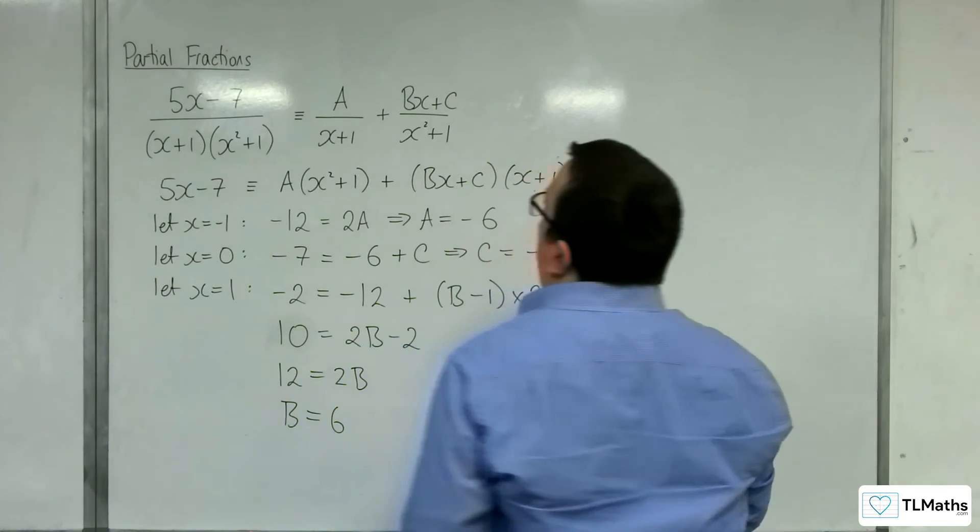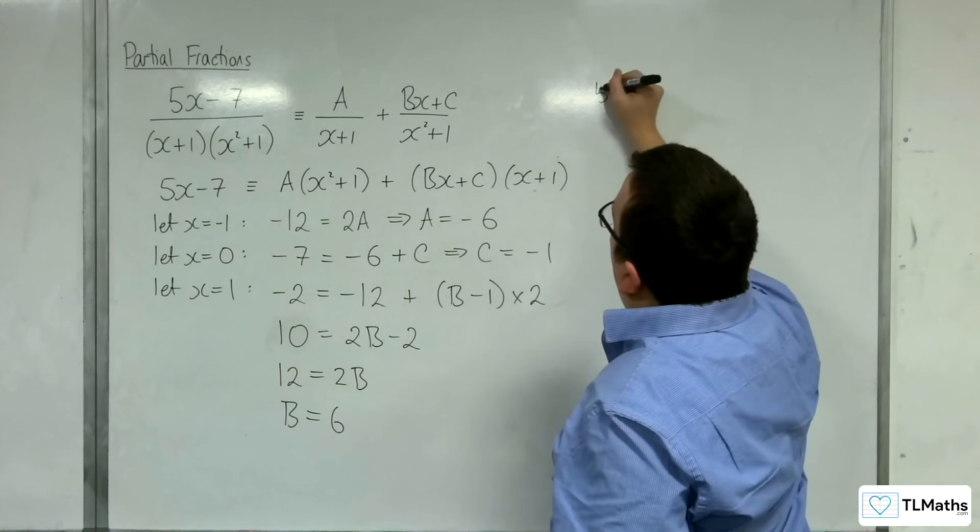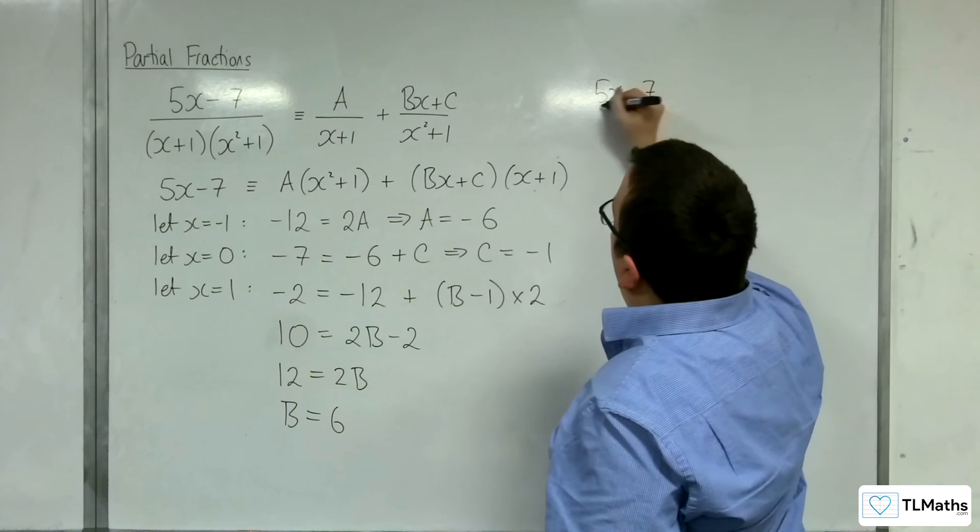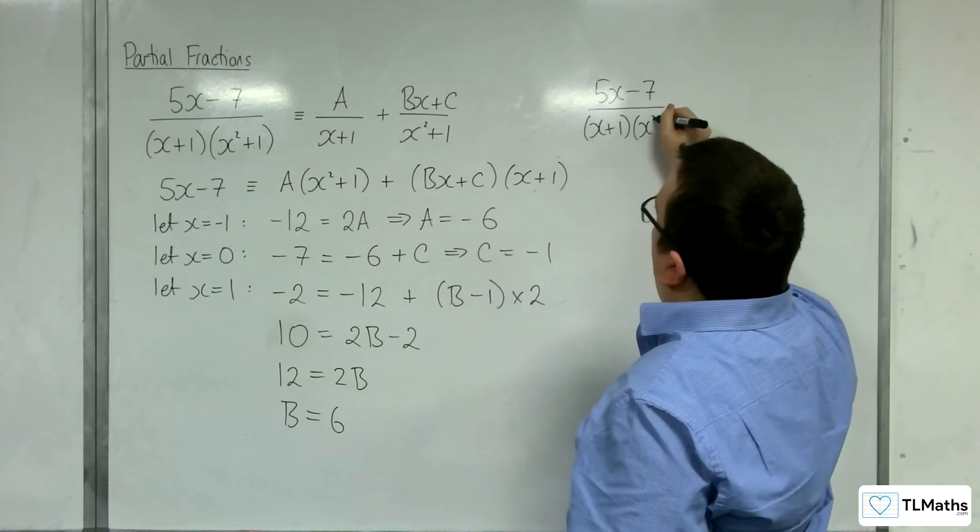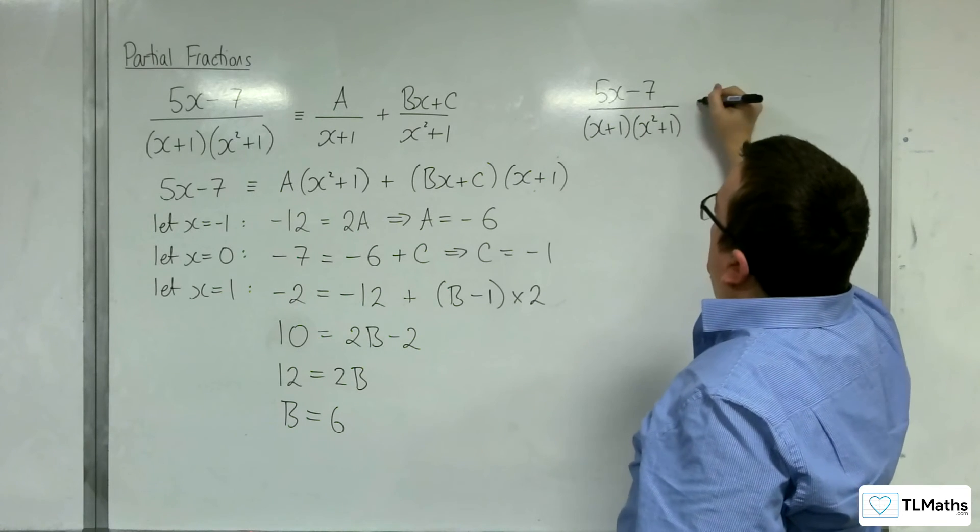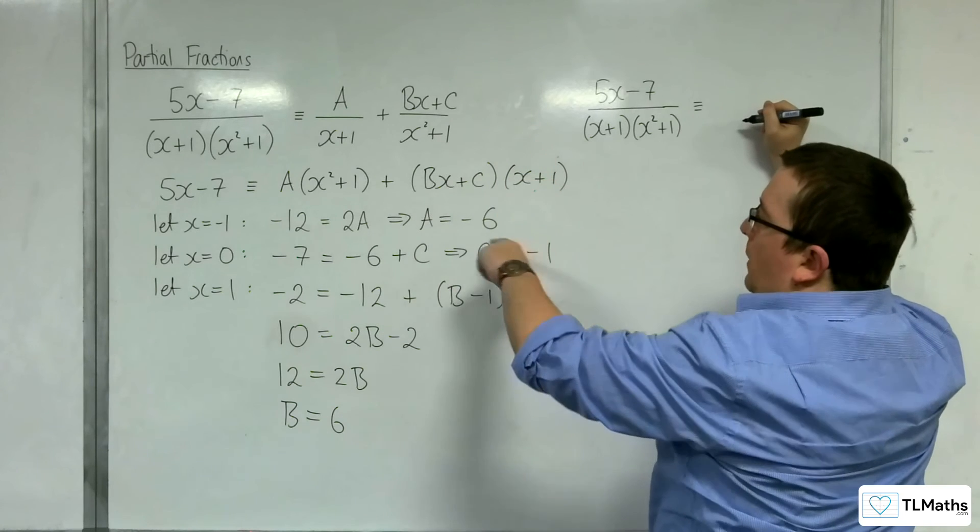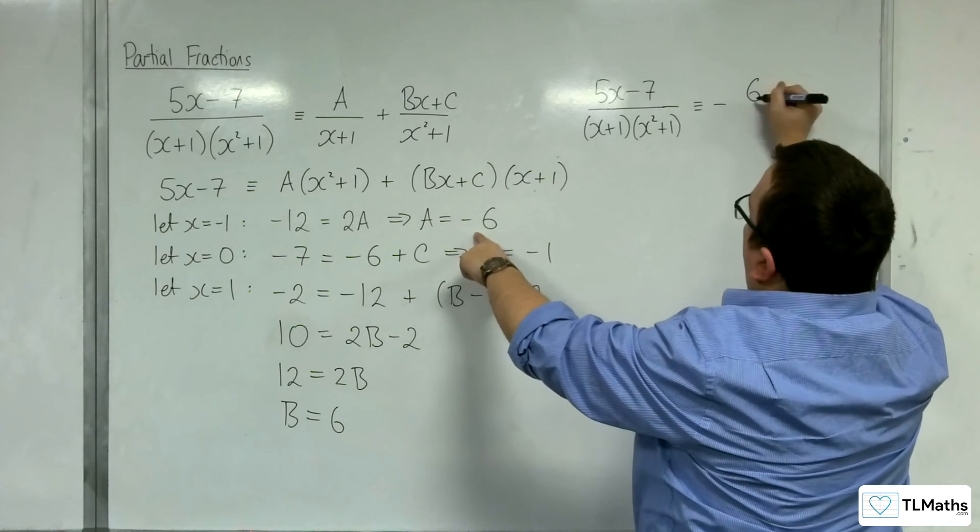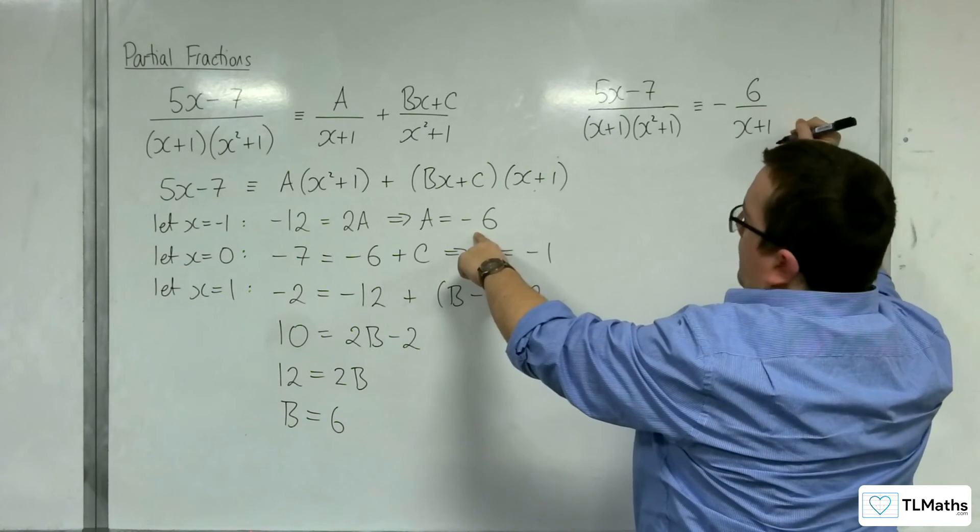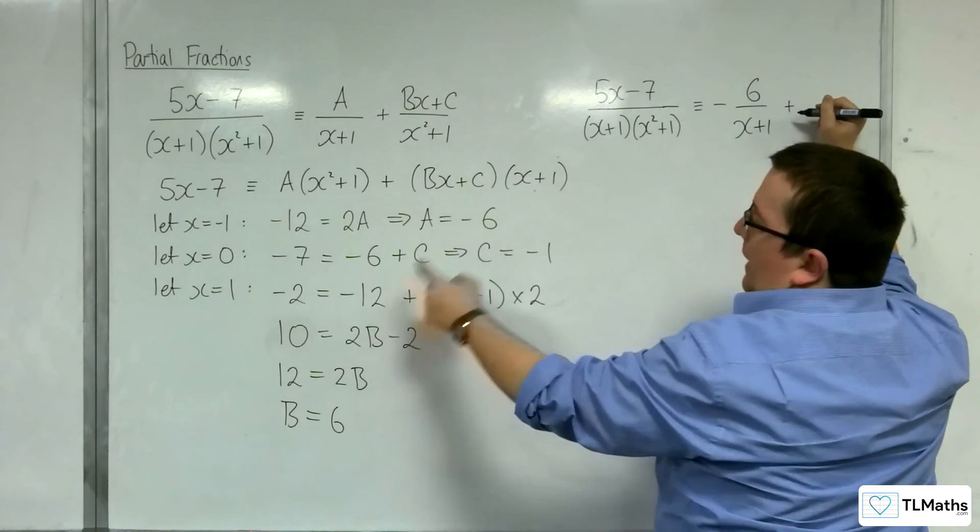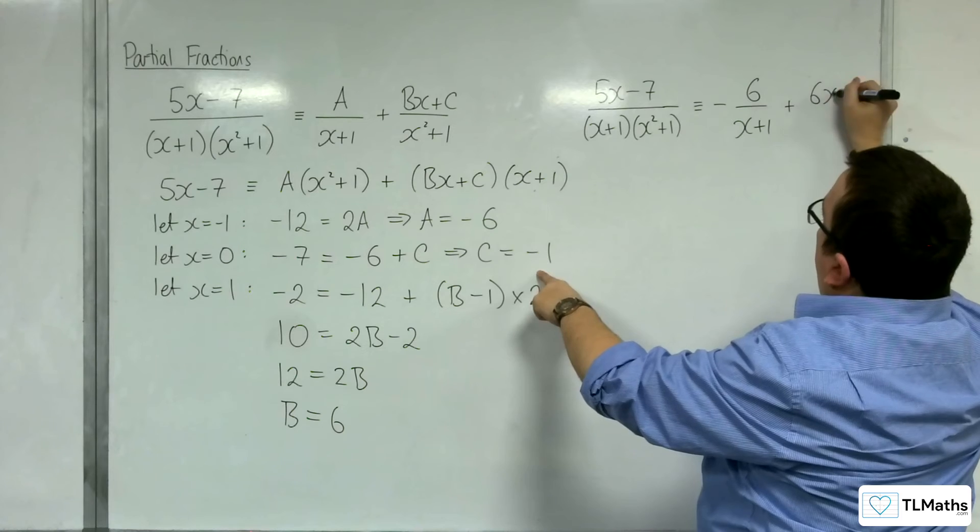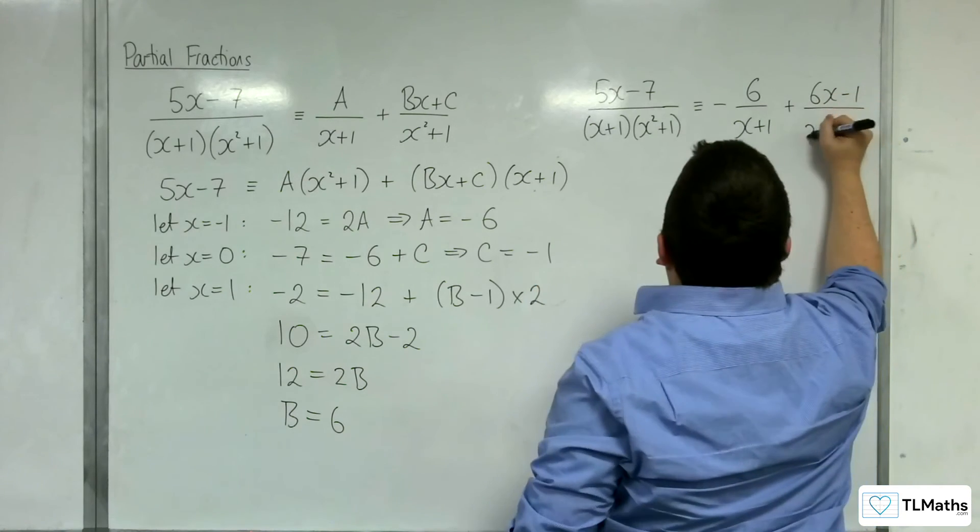So we now have the A, the B, and the C. So 5x take away 7 over x plus 1, x squared plus 1, will be equivalent to A over x plus 1, so minus 6 over x plus 1, plus Bx, so 6x take away 1, over x squared plus 1.